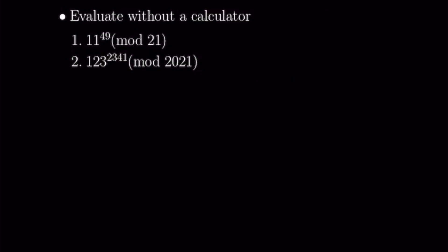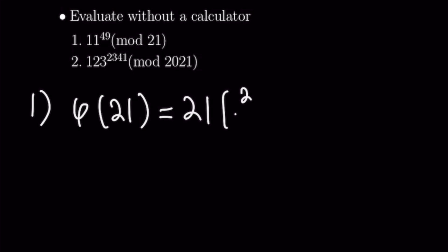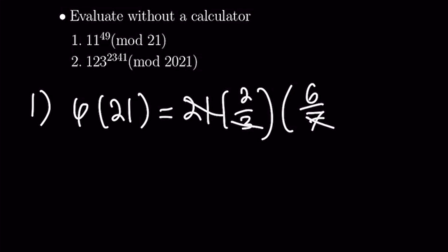For our second example we are going to be simplifying expressions without employing a calculator, using our trick to reduce exponents via the totient function. We start by taking φ(21). The divisors of 21 are 3 and 7, so φ(21) = 21 × (2/3) × (6/7) = 12. Reducing 49 mod 12: since 4 × 12 = 48, we get 1. So 11^49 is congruent to 11^1 ≡ 11 (mod 21).